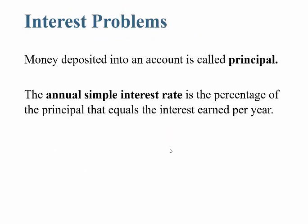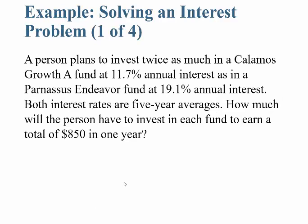Let's move on to interest problems. Money deposited into an account is called the principal — for example, if I put $1,000 into a bank account, that's the principal. The annual simple interest rate is the percentage of the principal that equals the interest earned per year. A person invests twice as much in a Columus Growth A fund at 11.7% annual interest as in a PE fund at 19.1% annual interest. How much must be invested in each fund to earn a total of $850 in one year?